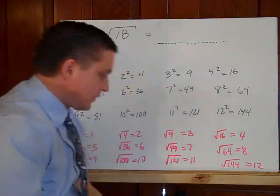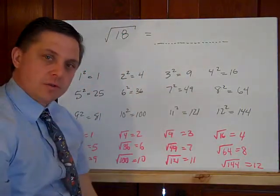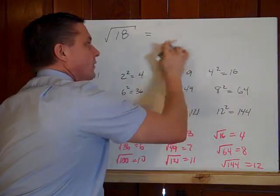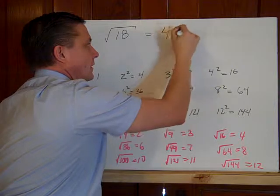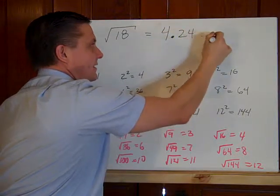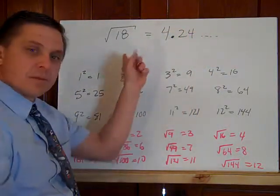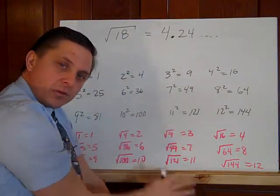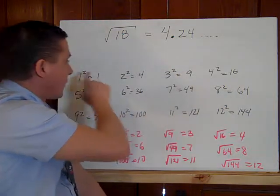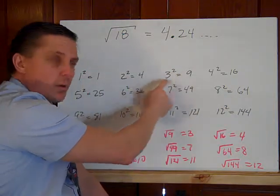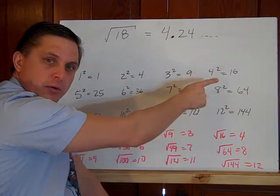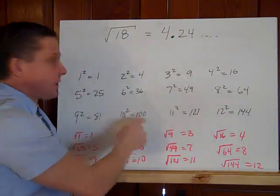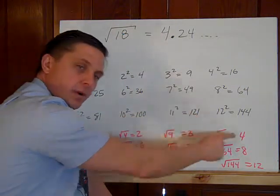Likewise, we can remind ourselves that we can grab a calculator and find out that if you type in the square root of 18, it's approximately 4.24 dot dot dot. And that should make sense when we think about our perfect squares. I made a table here in black of the perfect squares: one squared is one, two squared is four, three squared is nine, four squared is 16, 25, 36, 49, 64, 81, 100, 121, 144.